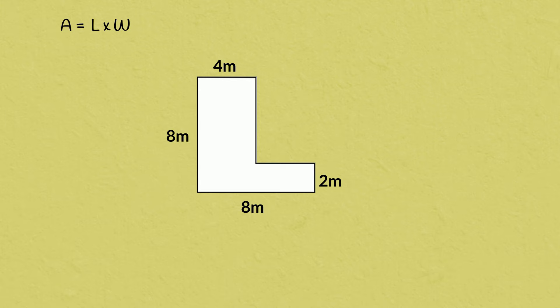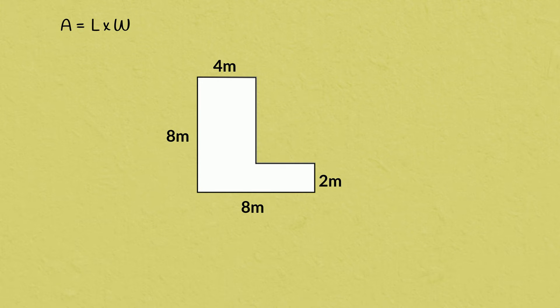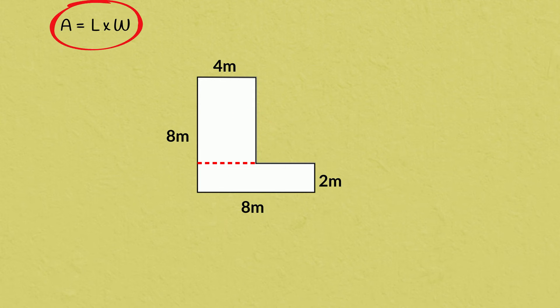So what can we do? Well, if we break down a compound shape into more simple geometric shapes — for example, rectangles — then we can work out the area of those simple shapes rather than the compound shape. This shape can be broken down into two rectangles. I'll draw a line here to show that. Now that we're working with two rectangles, we'll be able to use our formula of length times width.